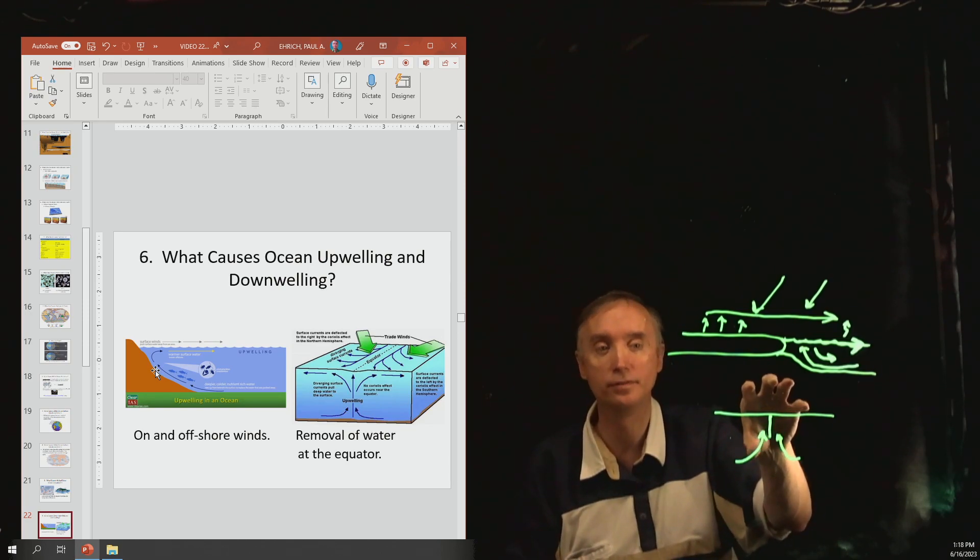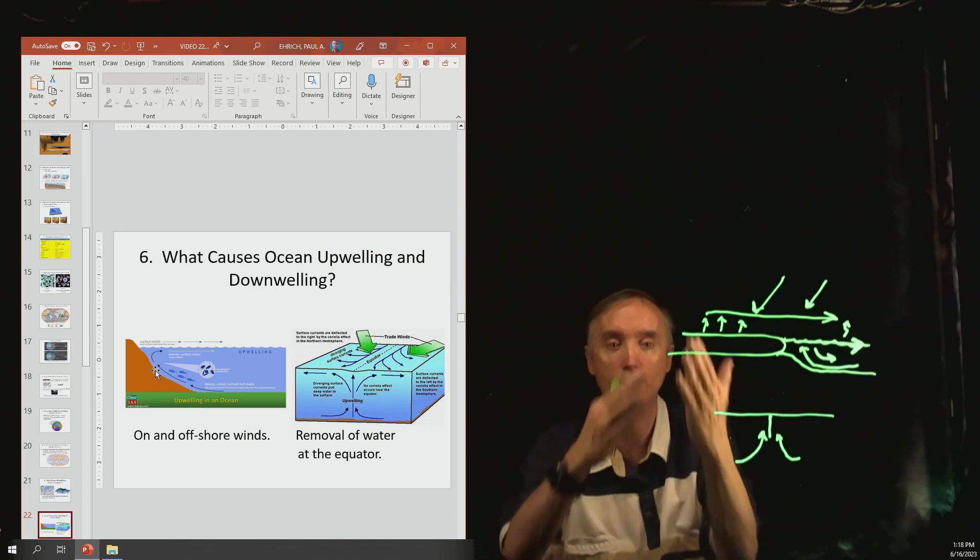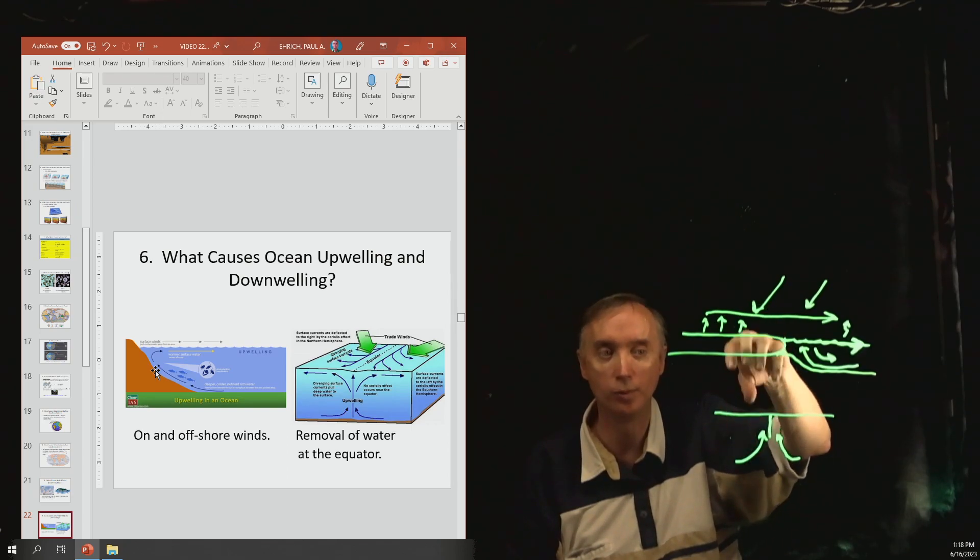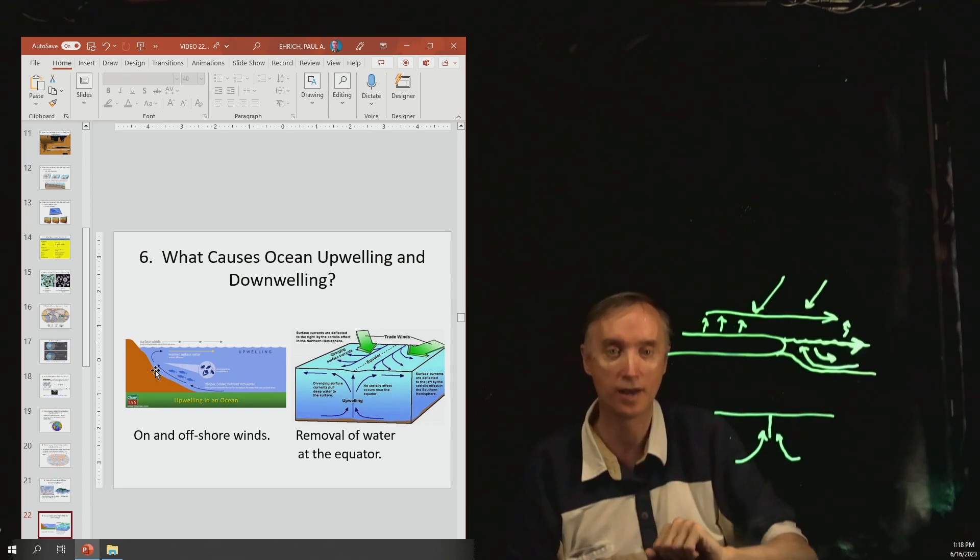In places, so what would be the opposite of this? So if evaporation is going to be causing upwelling, what would be a process that would cause downwelling? Well we would need to add water, and so precipitation could cause downwelling.